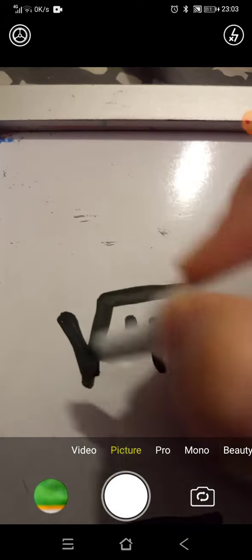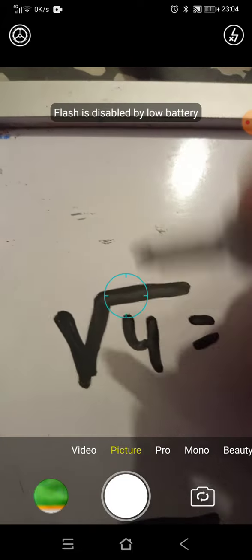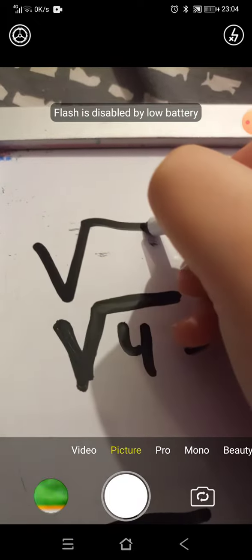Anyway, so square root of four. This thing above the four is the square root symbol, just drawn like that, just so you know about the square root symbol and math thing. So square root of four.